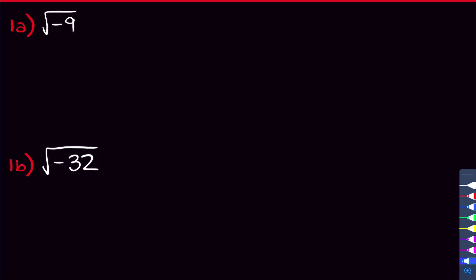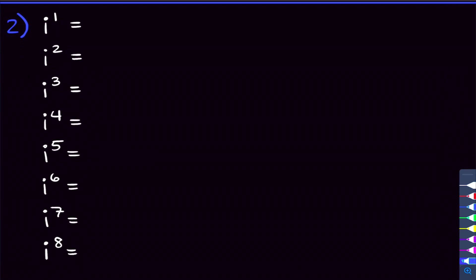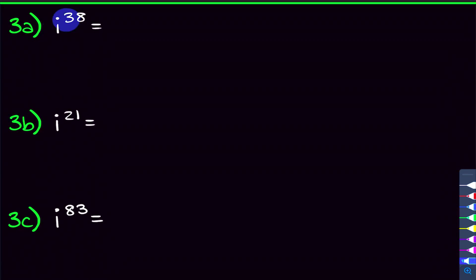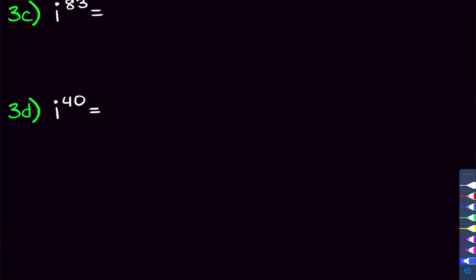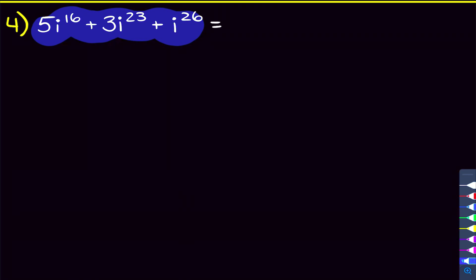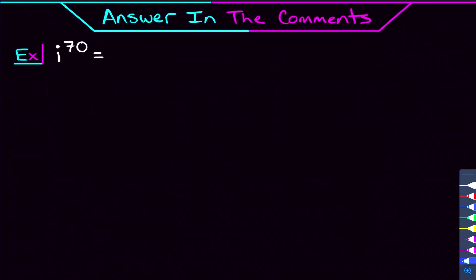By the end of this video, you're going to be feeling much better about imaginary numbers. We'll go through how to take the square roots of negative numbers, simplify those square roots, and then get into the imaginary number i to different powers. We'll notice a pattern to take i to higher powers like i to the 38th and i to the 21st, work through those problems, and finally put it all together.